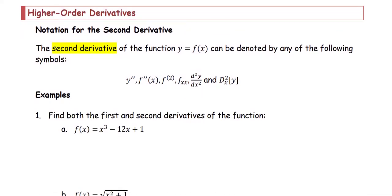The notation for the second derivative is in the form of y double prime, f double prime, or the superscript with parentheses around the number 2 for the second derivative, or the subscript xx. Another form is d²y/dx², or using the capital D as the differential operator with respect to x twice for the y variable, based on the function y equals f(x).